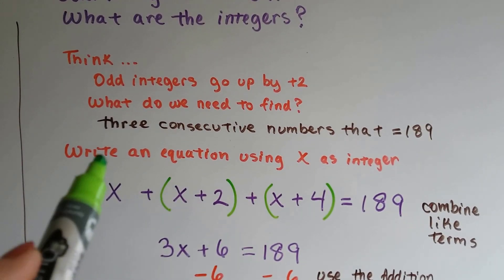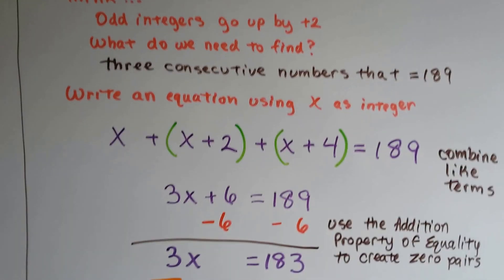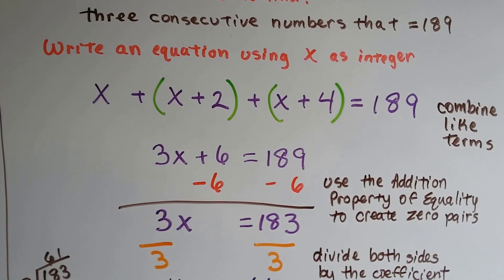Now we can combine like terms. I see 1, 2, 3x plus 6. So now we have 3x plus 6 equals 189.